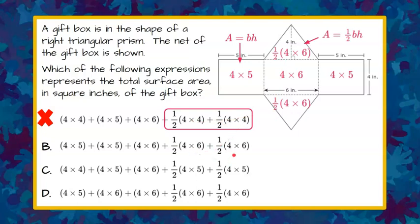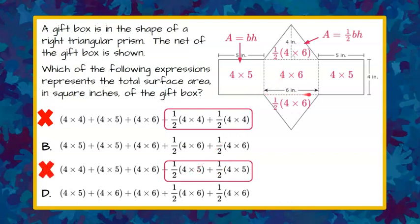It could be B, and it cannot be C because those triangles show four by five — they've identified the base and height incorrectly. This is clearly marked six, and a height is always perpendicular to the base, so it's four and six.